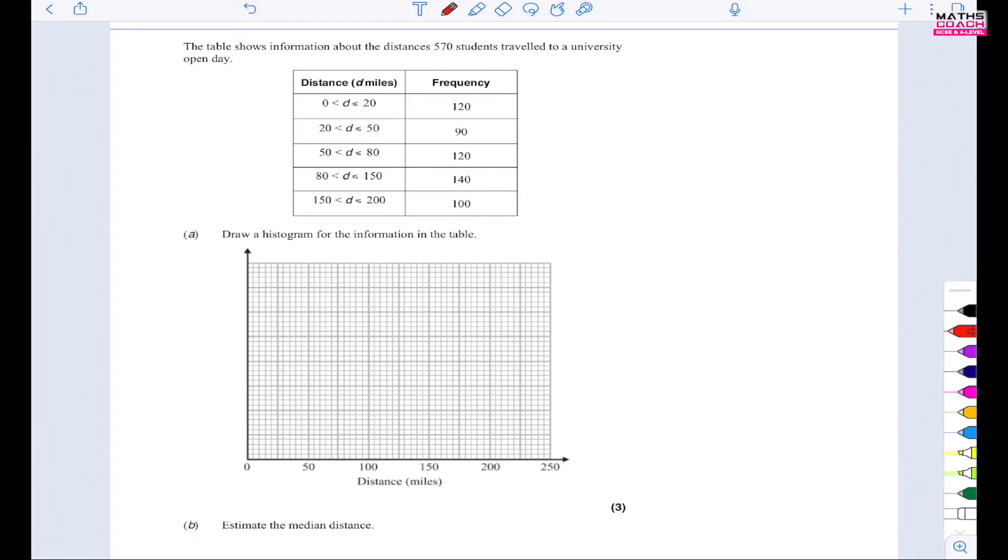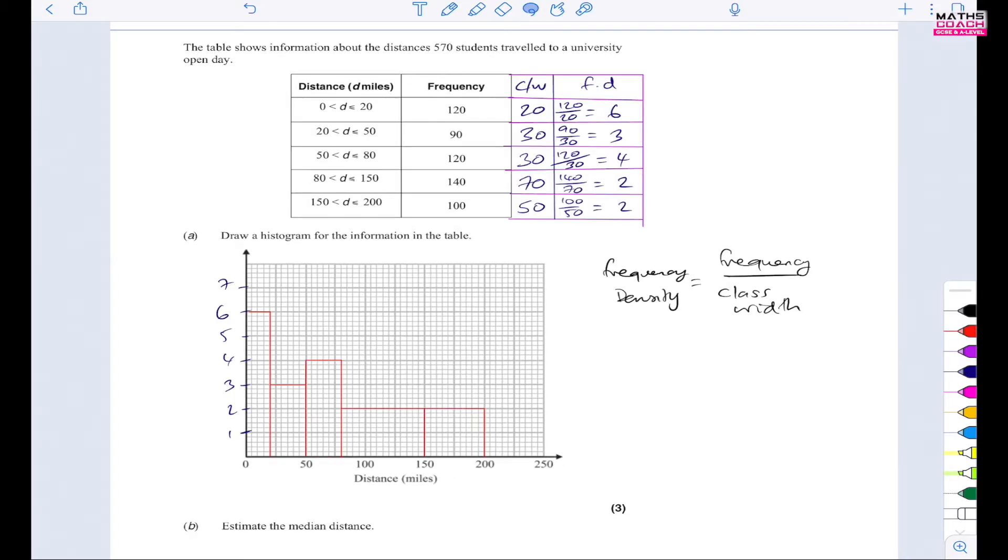The table shows information about the distances 570 students travel to in a university open day. So I'm going to quickly generate this table. So here is my completed histogram. You can see how this is done by watching the previous video where I go through this question. So, what is the median distance?